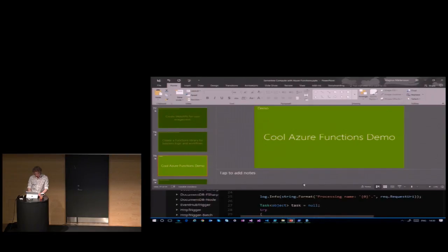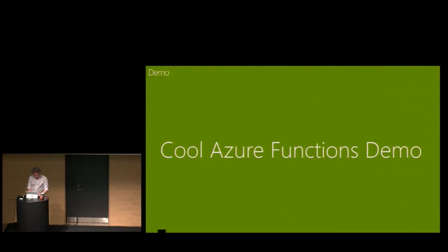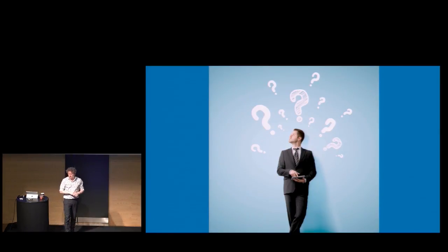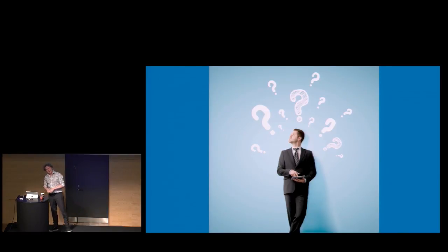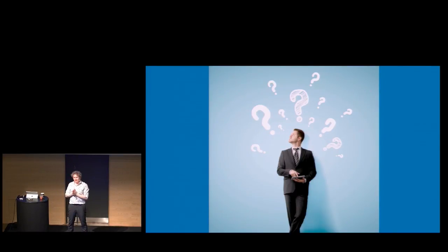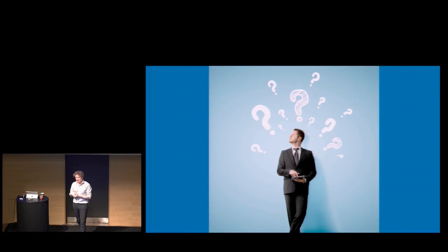We're running out of time, so let's wrap up with Q&A. The craziest thing people do with functions — most people have their heads on straight. The main anti-pattern I've seen is not treating functions properly: doing synchronous things when they should be doing async. People should be doing smart things like async programming.